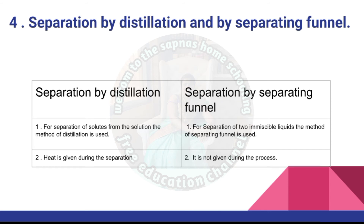Differences between separation by distillation and separation by separating funnel: For separation of solutes from a solution, the method of distillation is used. For separation of two immiscible liquids, the method of separating funnel is used. In distillation, heat is given during the separation process. In separation by separating funnel, heat is not given during the process.